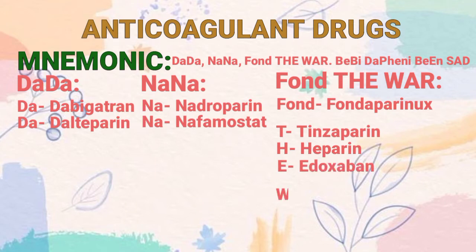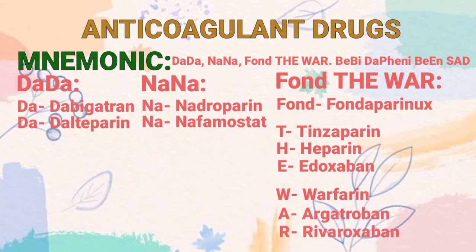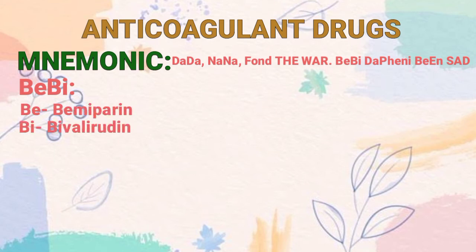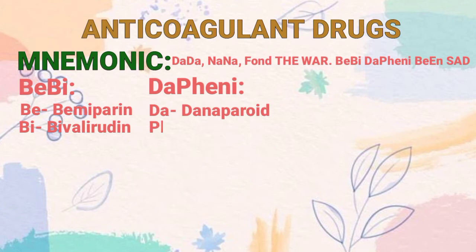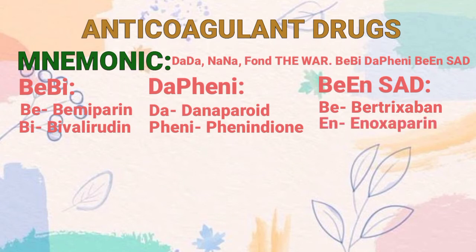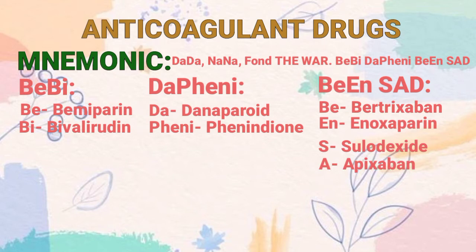W stands for warfarin, A stands for argatroban, R stands for rivaroxaban. Bebi: B stands for bemaparin, B stands for bivalirudin. Daphini: DA stands for danaparoid, PHINI stands for phenindione. Binsad: B stands for betrixaban, N stands for enoxaparin, S stands for sulodexide, A stands for apixaban, D stands for desirudin.